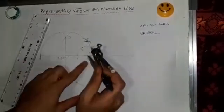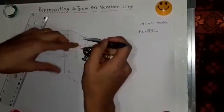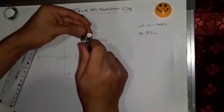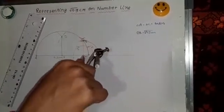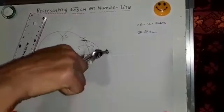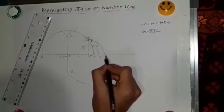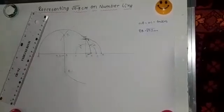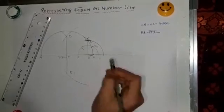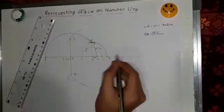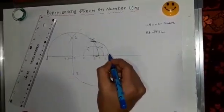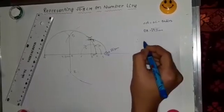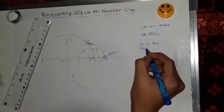So now take B and R, I will take B and R as the radius and the center B. Now draw an arc on the quadrant and it will intersect the line at S. So therefore I will just name it, better Z not X. So therefore this point Z is root 9.3 on the number line. So therefore Z is the required point.